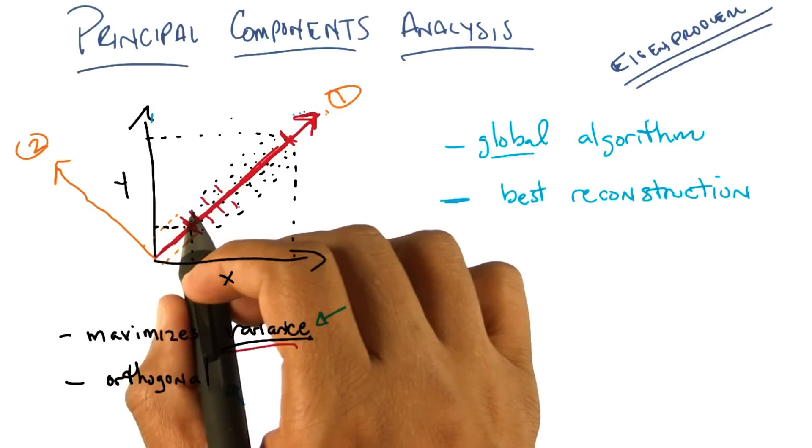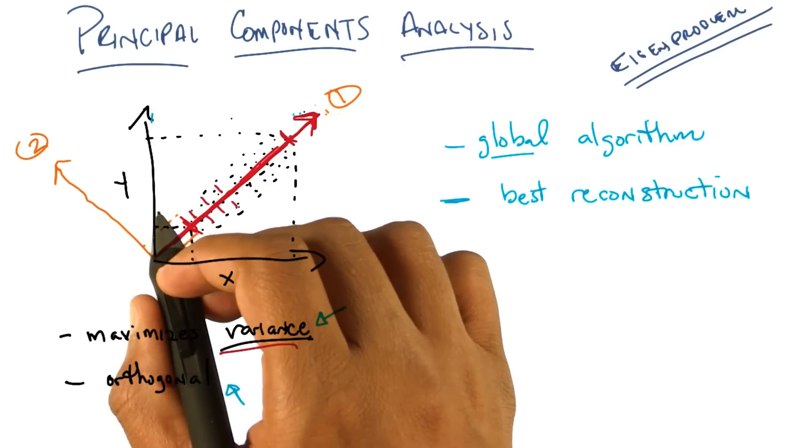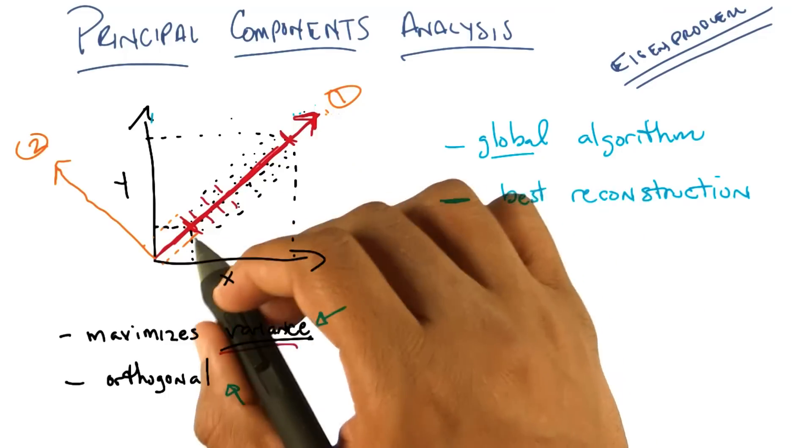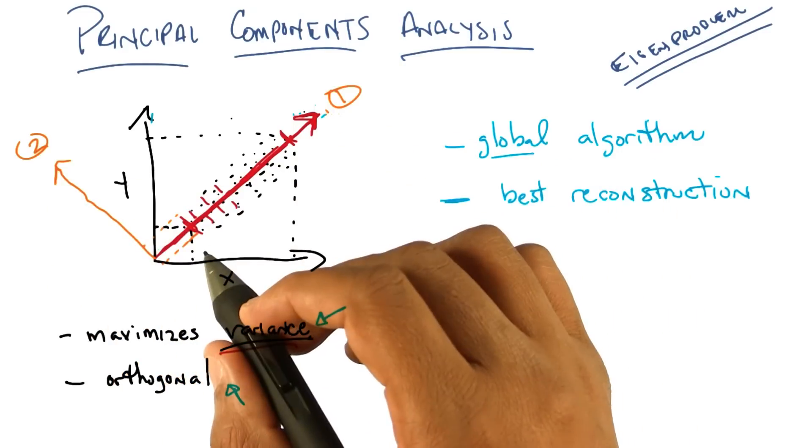And the second dimension, or the second feature, just tells me how far along a dot is on this particular dimension or axis. And similarly, by projecting onto red and onto orange, I'm telling you how far along a point is along this axis and along that axis.